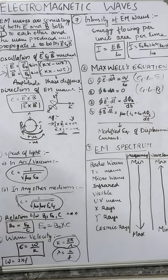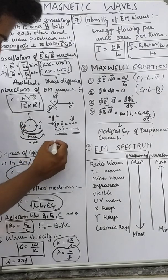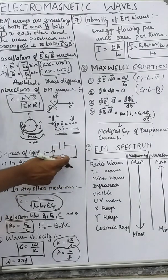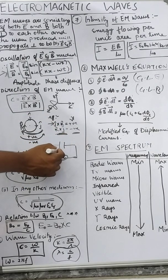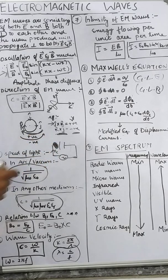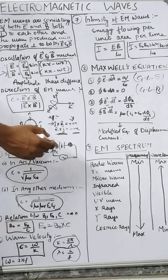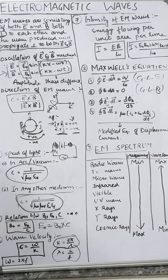Change in magnetic field will give you current. The last equation is the modified equation of displacement current. The small displacement between the charges of a capacitor plate causes the change in electric field, due to which magnetic field occurs.